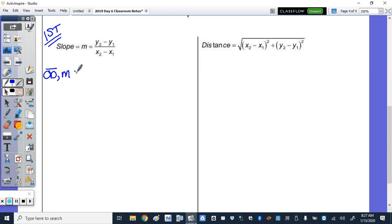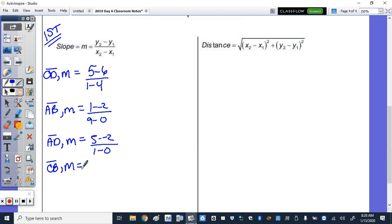my slope is, well subtracting, so change of Y over change of X would be 5 minus 6 over 1 minus 4. And then the slope of AB would be 1 minus negative 2 over 9 minus 0. And then I want to show that the legs, AD, the non-parallel sides, so AD, the slope is 5 minus negative 2, 1 minus 0. And then the other leg, CB. So 6 minus 1 over 4 minus 9. So this calculation ends up being negative 1 over negative 3, which is a positive 1/3.